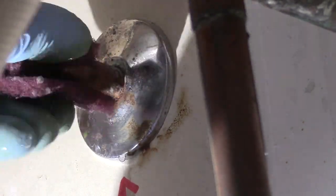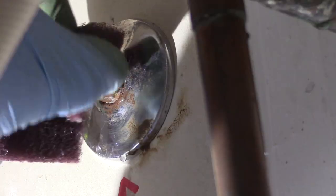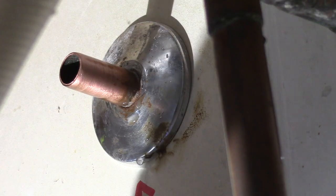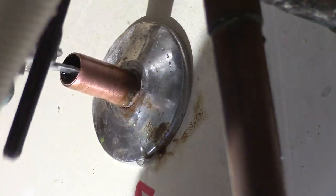We clean up our pipe with a scouring pad or steel wool, then deburr the inside of the pipe.